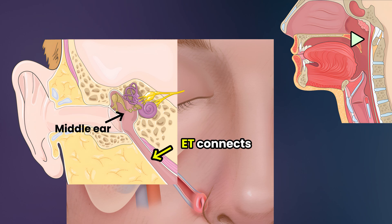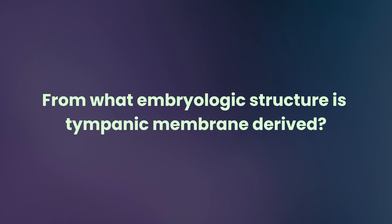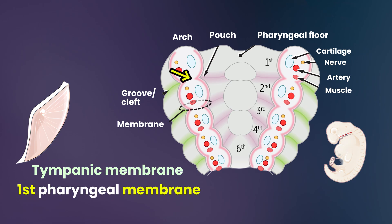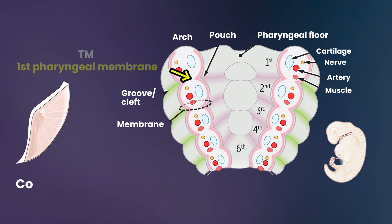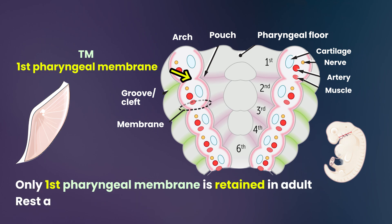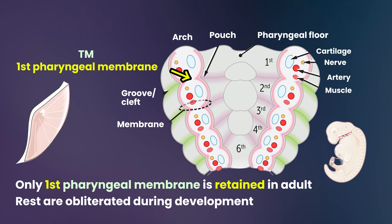The eustachian tube connects the middle ear to the nasopharynx. The tympanic membrane derives from the first pharyngeal membrane. The pharyngeal membranes constitute the tissue between the pharyngeal groove, or cleft, and the pharyngeal pouch. Only the first pharyngeal membrane is retained in the adult; the rest are obliterated during development.